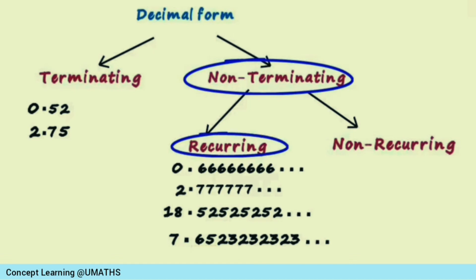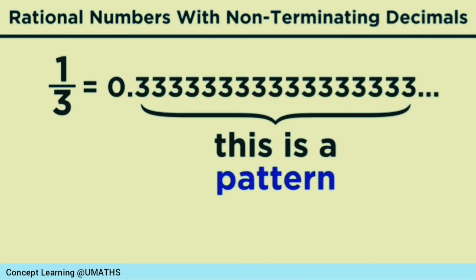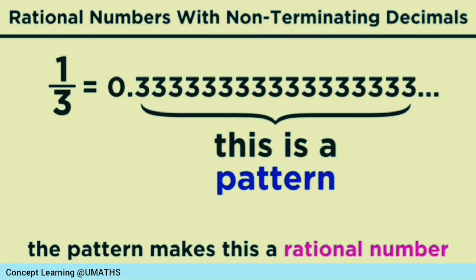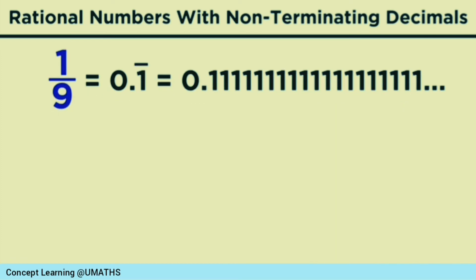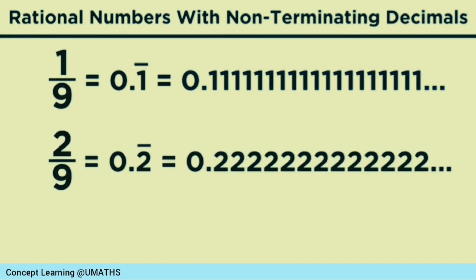The rational number 1 upon 3, written in decimal form, has the digit 3 repeating — the process is unending. A repeating digit makes a pattern, and this pattern makes the number a rational number. A bar is the symbol used for repeating digits. Here, the digit 1 repeats in one case, and digit 2 repeats in another case.